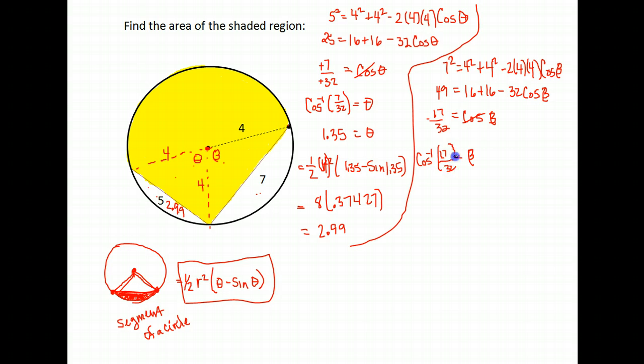Make sure that my negative is hard to see there—that is a negative 17 over 32. So we're doing the inverse cosine of negative 17 over 32. Again, make sure your calculator is in radian mode when you're doing that. And when you do, you get that beta is about 2.13. Okay, so this angle here is 2.13 radians.